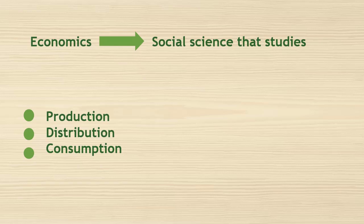Economics studies how goods and services go through three steps: production, distribution, and consumption. While goods and services go through these three steps, a large amount of phenomena can emerge as a consequence. These phenomena can range from small phenomena like a simple interaction between a buyer and a seller, to large-scale phenomena like inflation or economic growth.